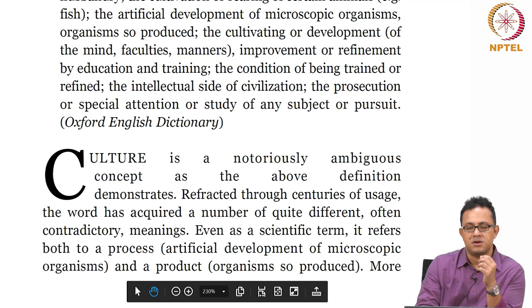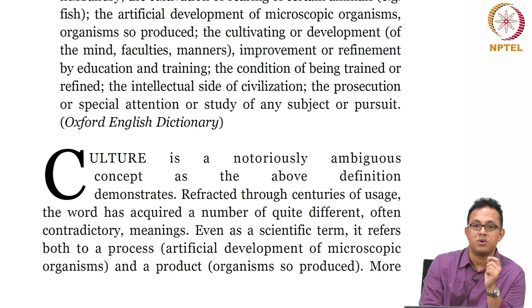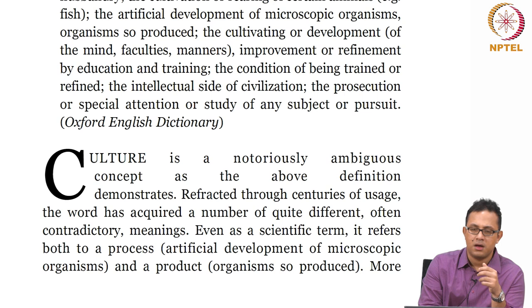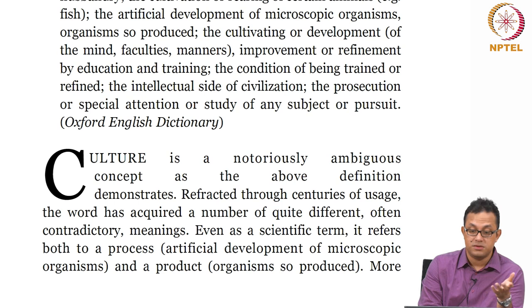Having given this range of random synonyms from the Oxford English Dictionary, Hebdige very quickly claims that culture is a notoriously ambiguous concept, as the above definitions demonstrate. The ambiguity, the conceptual ambiguity of culture is immediately evident in this series of synonyms. It is a very ambiguous, complex category which is sometimes notoriously difficult to define. The above definitions demonstrate that difficulty or impossibility.